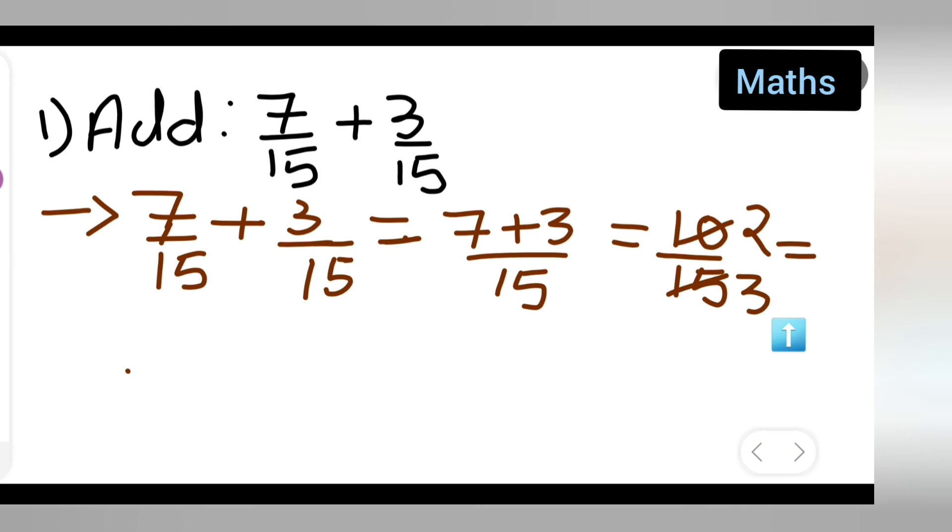Therefore, 2/3. So I can say: therefore, 7/15 plus 3/15 equals 2/3—that's your answer. I hope you all have understood how to add fractions. Thanks for watching.